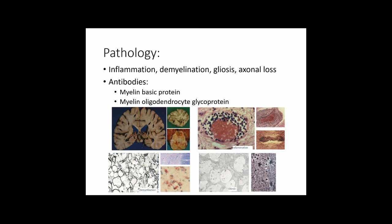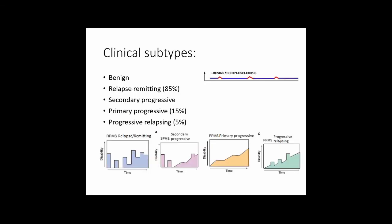Because MS is an autoimmune condition, it's associated with the production of antibodies against myelin basic protein and myelin oligodendrocyte glycoprotein — antibodies against oligodendrocytes — leading to loss of myelin and demyelination.